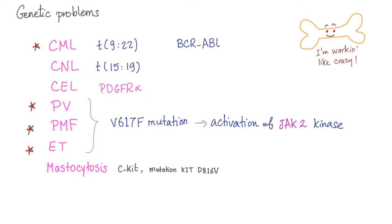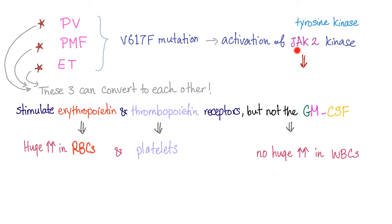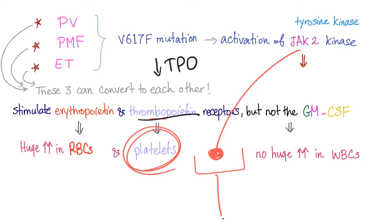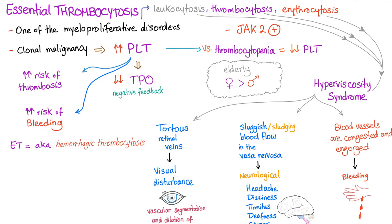The genetic problem in essential thrombocytosis is the famous JAK2 kinase mutation. JAK2 kinase is deceptive — it stimulates the receptor for thrombopoietin and leads to increased production of platelets. But that doesn't mean thrombopoietin level in the plasma is high. In fact, it's decreased, because if you already have lots of platelets, there's no need to secrete more TPO. So essential thrombocytosis is one of the myeloproliferative disorders.